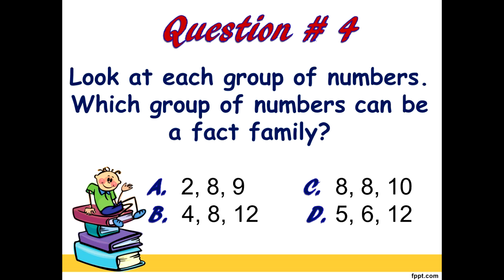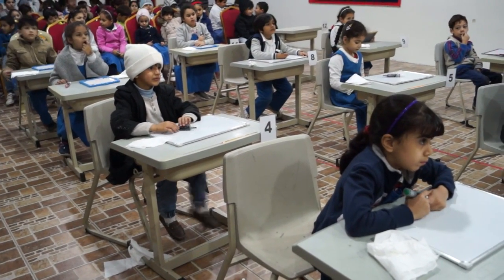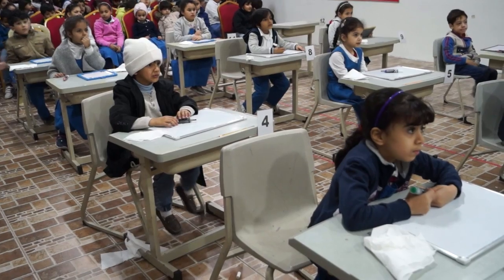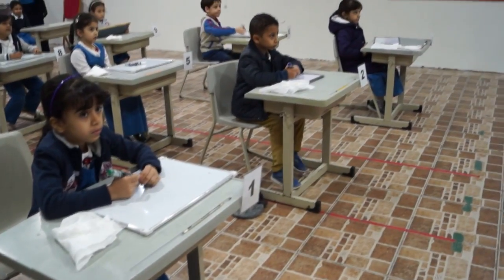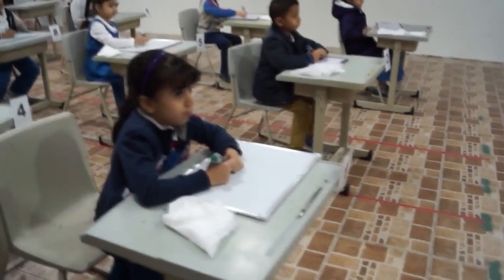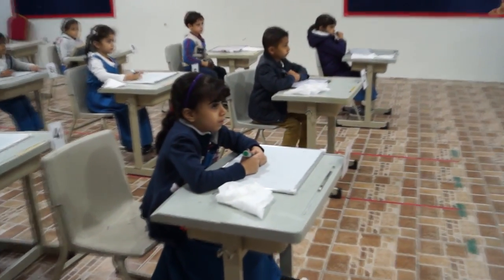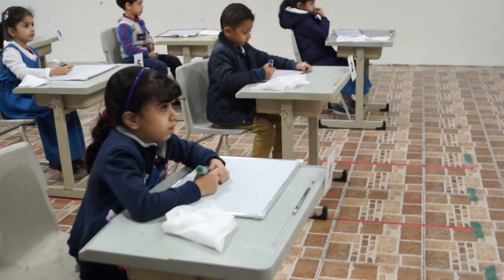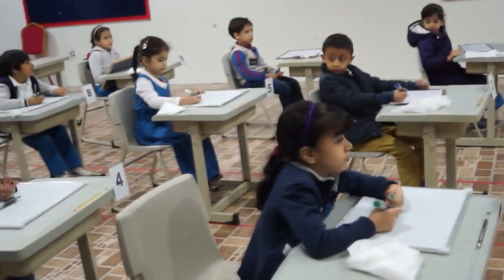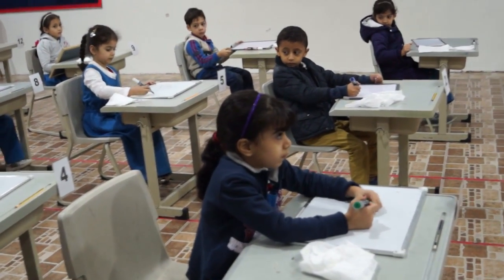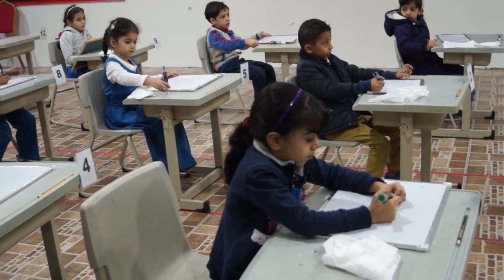Look at each group of numbers. Which group of numbers can be a fact family? A, 2, 8, 9. B, 4, 8, 12. C, 8, 8, 10. D, 5, 6, 12. Again, look at each group of numbers. Which group of numbers can be a fact family? A, 2, 8, 9. B, 4, 8, 12. C, 8, 8, 10. D, 5, 6, 12. Ready? Go!